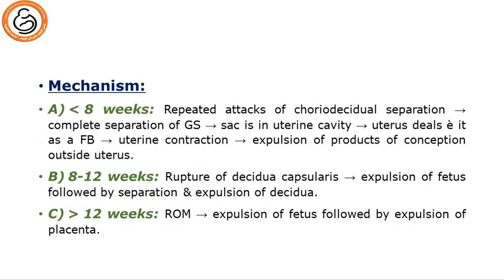How abortion occurs: the mechanism differs according to gestational age. At less than 8 weeks, there are repeated attacks of chorio-decidual separation until complete separation of the gestational sac. The uterus treats it as a foreign body; uterine contractions then expel the products of conception. Between 8 and 12 weeks, there is rupture of the decidua capsularis with expulsion of the fetus followed by separation and expulsion of the decidua. More than 12 weeks is considered like a miniature labor: rupture of membranes, then expulsion of the fetus, then expulsion of the placenta.